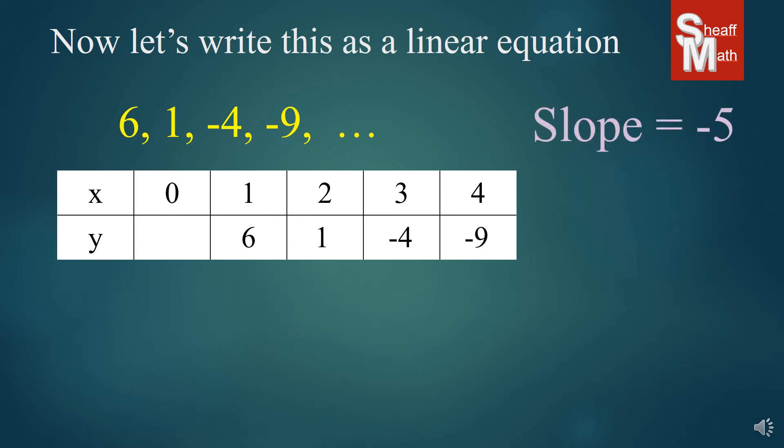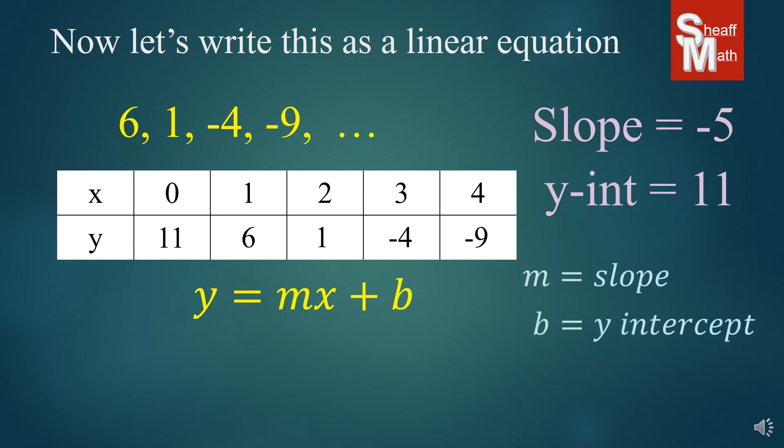Now, we need to find our y-intercept. So, we are going to go in the reverse direction. So, if we're going down by 5 to the right, we are going up 5 to the left. And so, this would make 11, our initial value. And that would be our y-intercept. And so, we put our y equals mx plus b. And remember, slope is m and the y-intercept is b. And we simply put in negative 5 and 11. And we have our equation. And so, you could find any term in this sequence by using this shortcut equation.